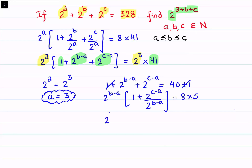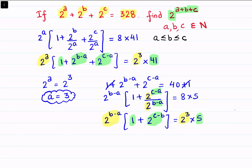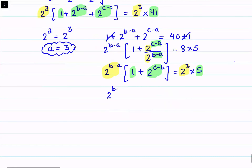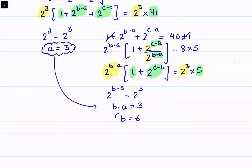Simplifying further: 2^(b-a) times (1 plus 2^(c-b)) equals 2^3 times 5. Since the bases are the same, dividing subtracts the powers, giving 2^(c-b). Again, the bracket is odd (1 plus even), and 5 is odd. Comparing even parts: 2^(b-a) equals 2^3, so b minus a equals 3. With a equals 3, we get b equals 6.